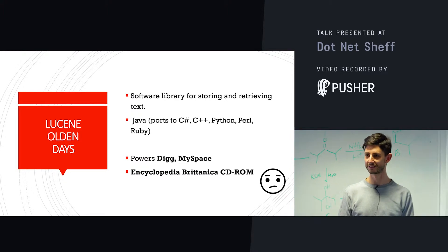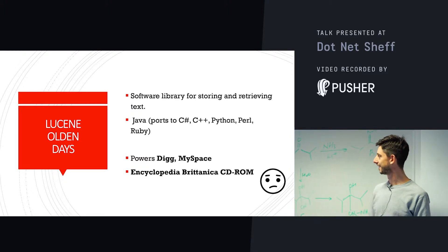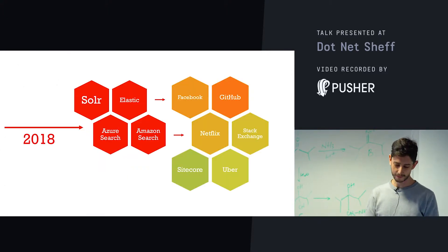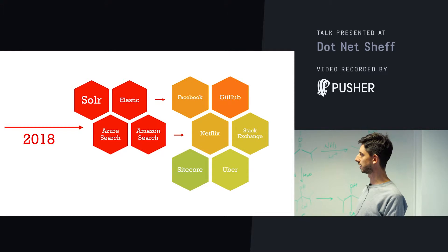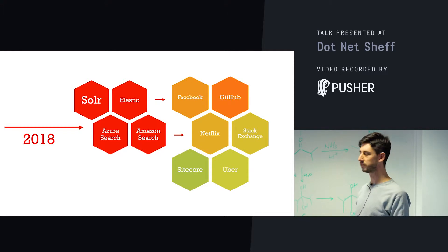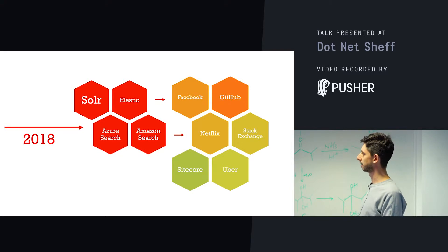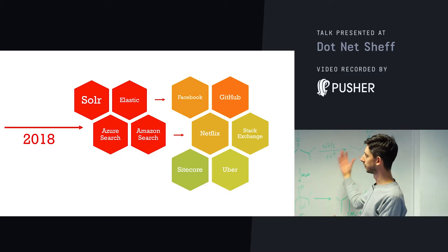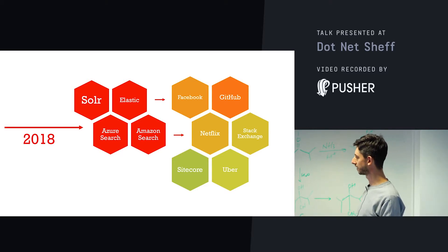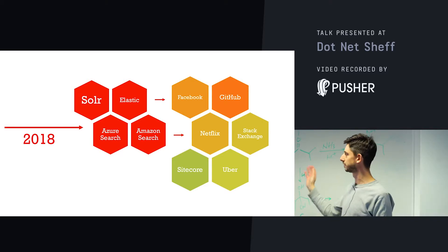So it pretty much has the kiss of death for anything it powers. But actually, bringing it up to date, it's underneath all the search platforms you probably use, like Solr and Elastic. Azure Search is an abstraction over Elasticsearch, which itself uses Lucene, as does Amazon Search. And on top of those, you get Facebook, GitHub, Netflix, Stack Exchange, and Uber. So you might have used Lucene in the last hour without realizing it.